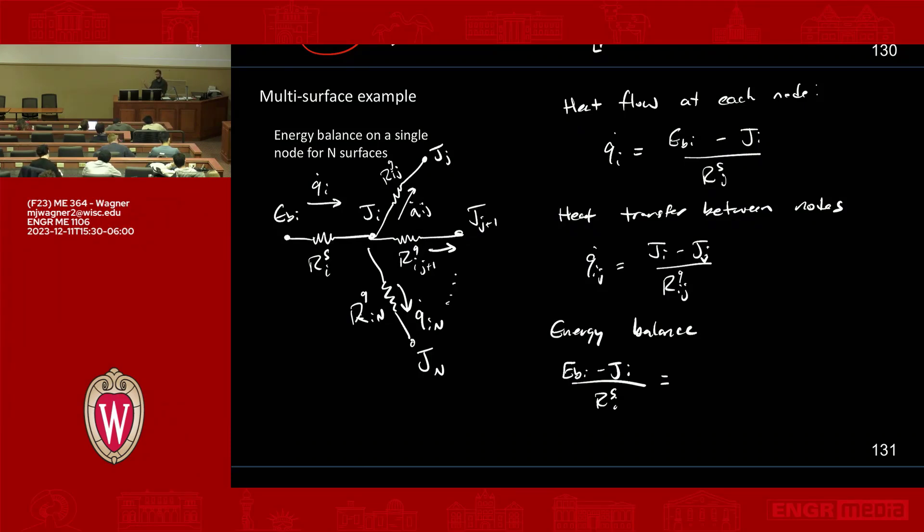That has to equal all the stuff that's leaving from the right, which is the sum of all those radiosity pieces. So this is the sum for index J from 1 to N of JI minus JJ over RGI to J.